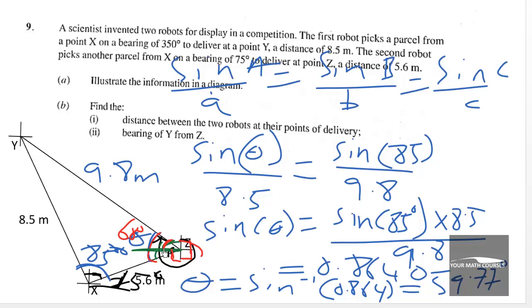So the bearing of Y from Z will be equal to, so this is the part ii, will be equal to bearing of Y from Z will be equal to 270 plus 45 degrees and that will be equal to 315 degrees to the nearest degree.